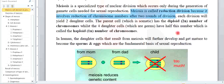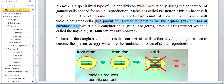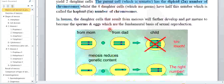بالـ eggs نفس الشيء. Each division will yield two daughter cells. The parent cell, which is somatic, has the diploid number of chromosomes. المصدر هو diploid خلية جسمية طبيعية وليس خلية جنسية. من تنقسم الخلية الجسمية مرة وثانية مرة النتيجة النهائية هي haploid number of chromosomes — نصف أعداد الكروموسومات. In a human, the daughter cells that result from meiosis will further develop and mature to become sperms and eggs.